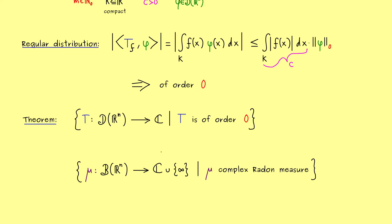And now the claim here is, that there is no difference between these measures and the distributions of order 0. More precisely, we would say, we have a canonical bijection between those sets.